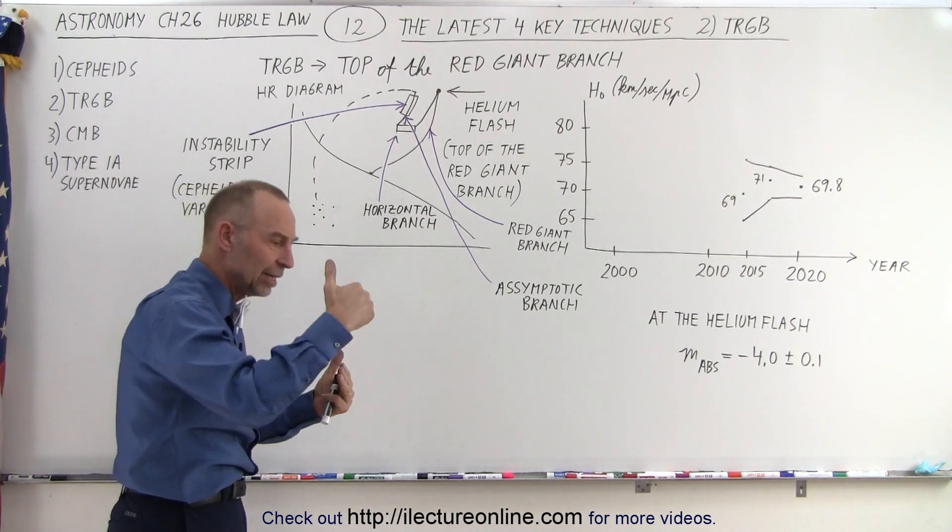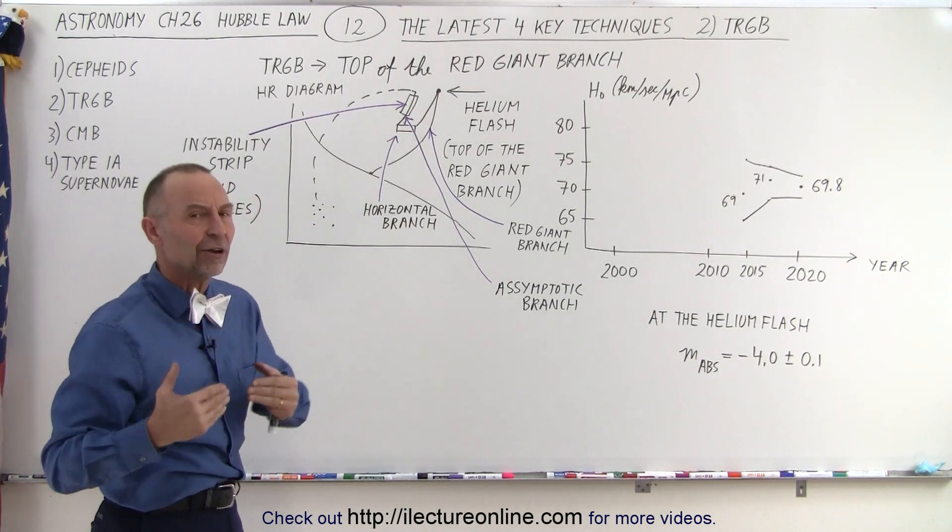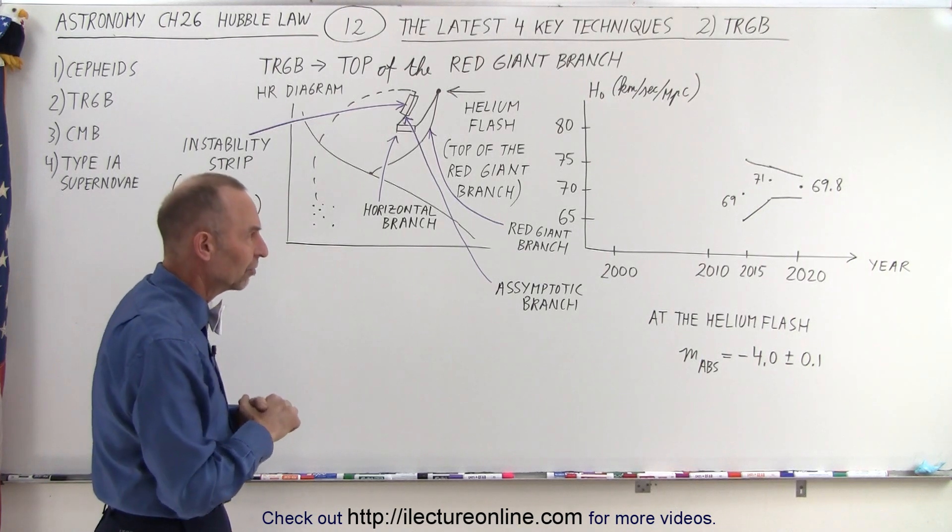Therefore, we can then compare the distance of the galaxies to the velocities of those galaxies, and come up with a very accurate measurement of the Hubble constant.